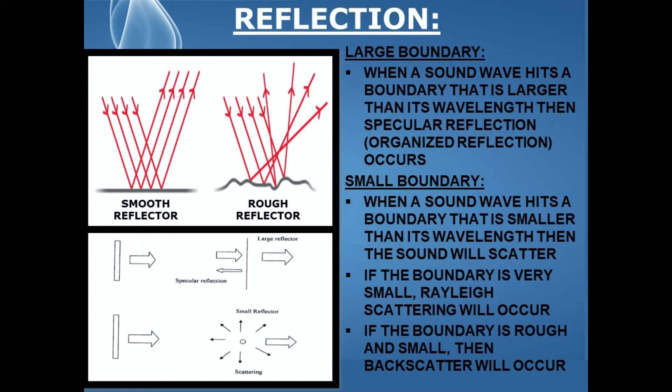Not only does the surface of the boundary matter — whether it's smooth or rough — but also the size of the boundary matters. A small boundary is a boundary that's smaller than the wavelength of the sound wave, and when a sound wave hits a boundary smaller than its wavelength, the sound is going to scatter. Scattering is the redirection of the sound wave in multiple directions, and scattering can be organized, meaning sound waves are redirected in a uniform pattern, or it can be disorganized, with non-uniform redirection.